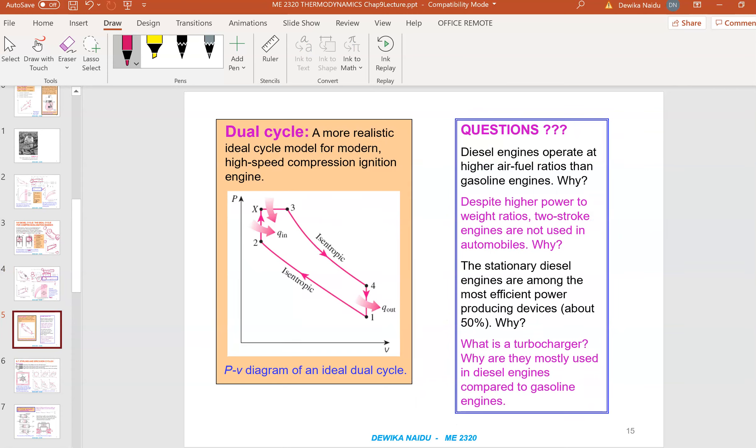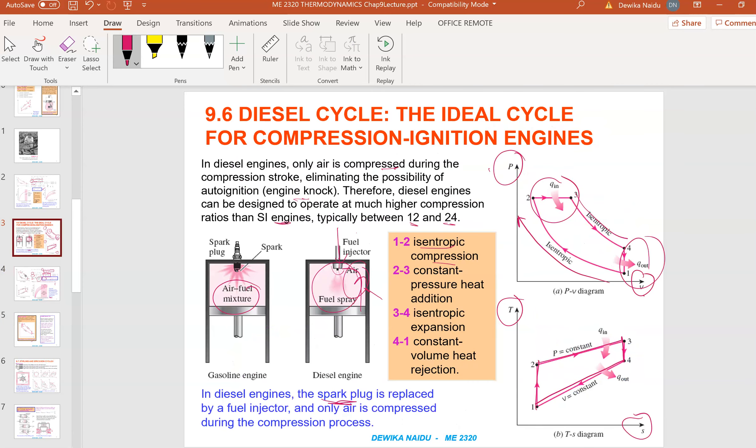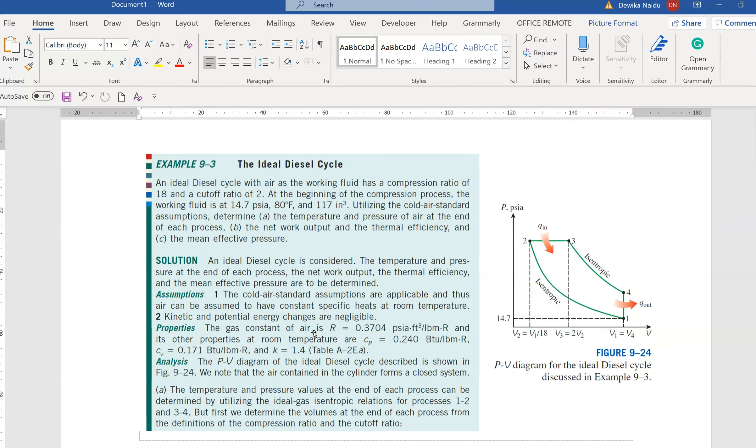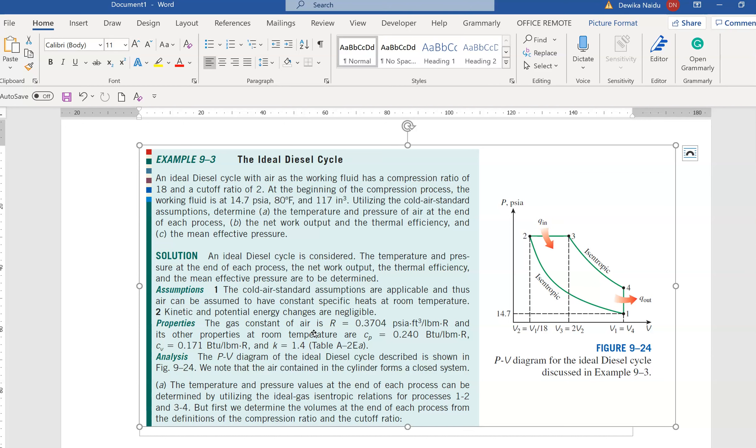A dual cycle is a more realistic ideal cycle model for modern high speed compression ignition engines. This is an example of a dual cycle, but what you need to concentrate on is actually both the petrol and the diesel cycle. I am just going to bring you to this question, solving this question. It is a bit complicated because the version that I have here is in non-SI version. Let us ignore the units. I know we should not be ignoring the units, but I have no choice. Your textbook is on SI version, so you can just use a similar thing.